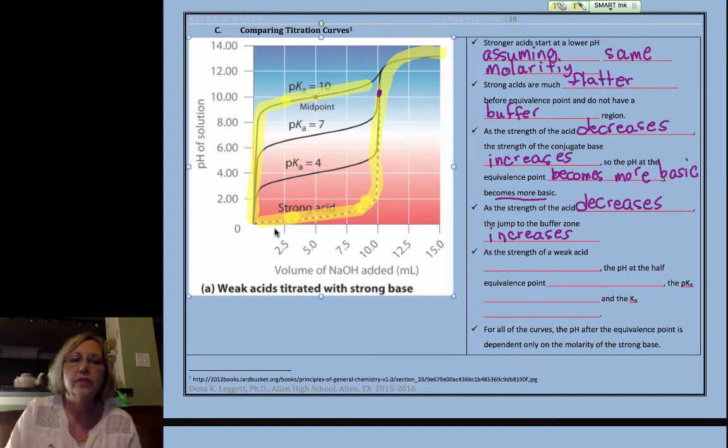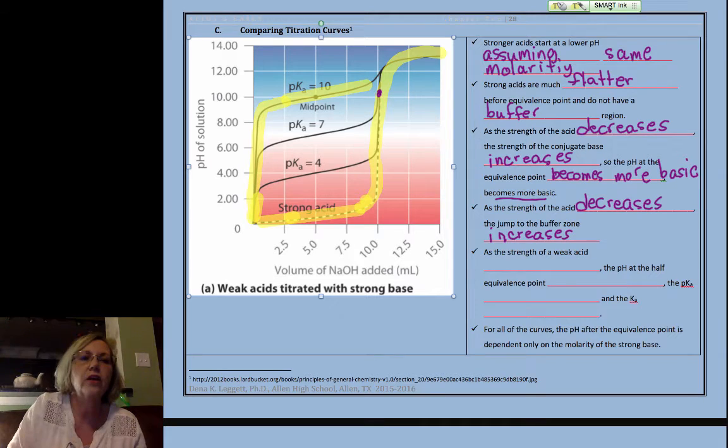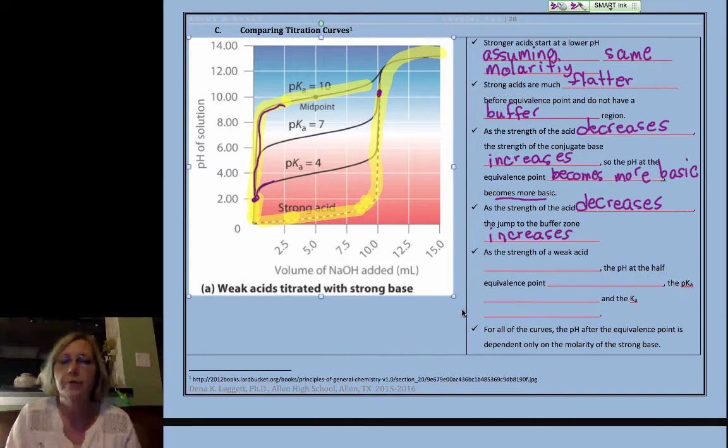This weaker acid had a smaller jump, and it probably didn't start down that low. Let's say it probably started right here, more realistic. It had a smaller jump. This one had a much larger jump to the buffer zone.